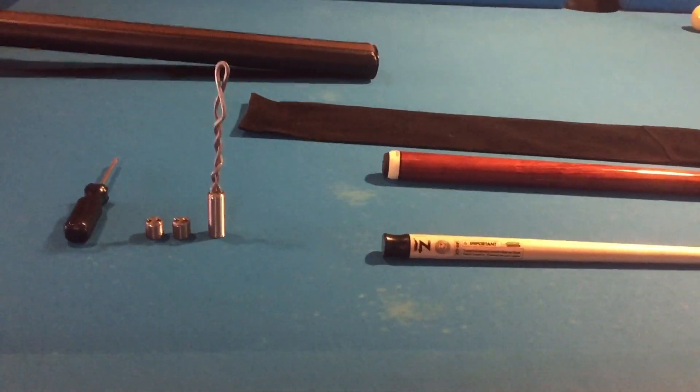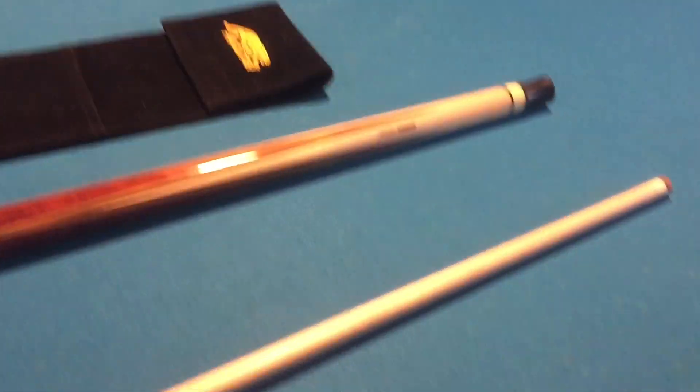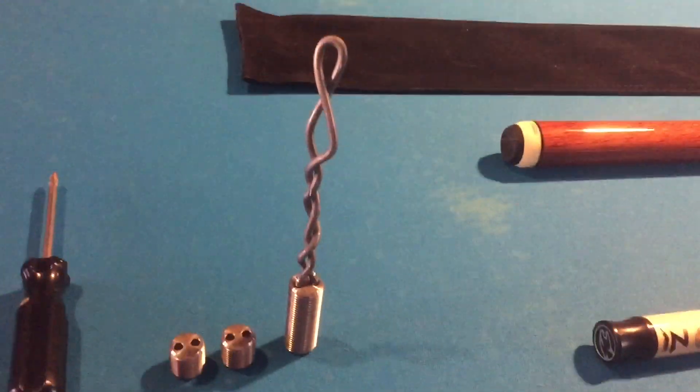What's up guys, what I have here is the Predator Roadline 4-Point Rhingus. And what I was going to talk about is the weight bolt system on the Predators.